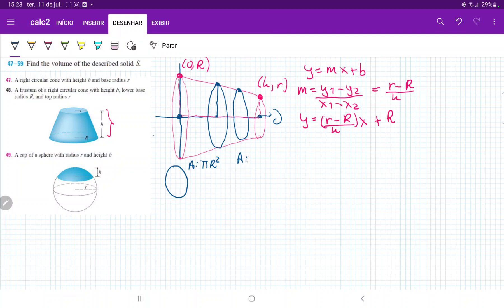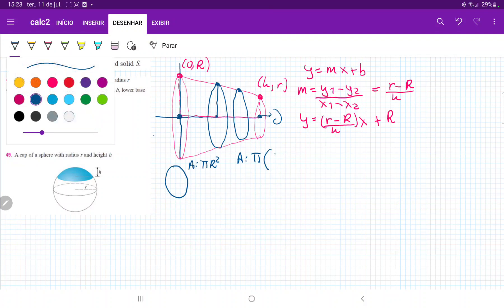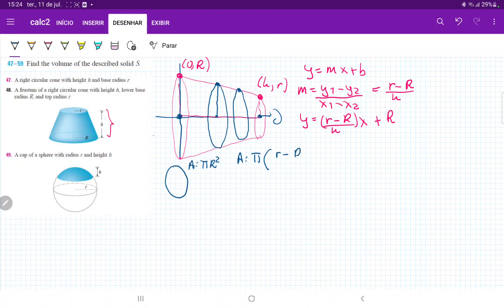So therefore, our area here is pi times this guy squared.